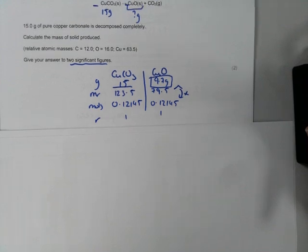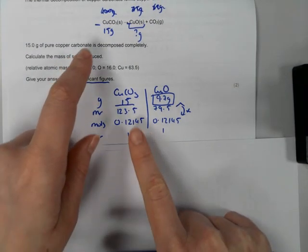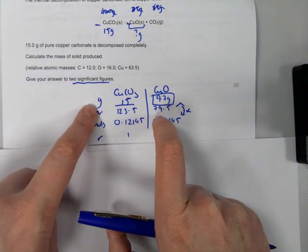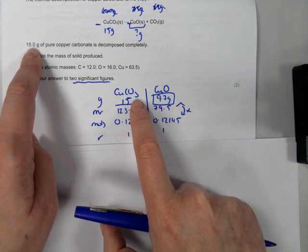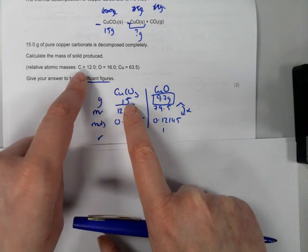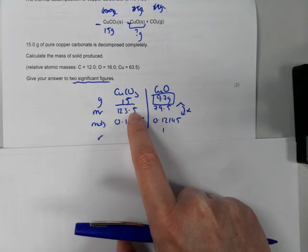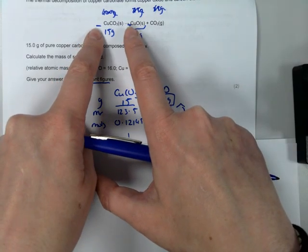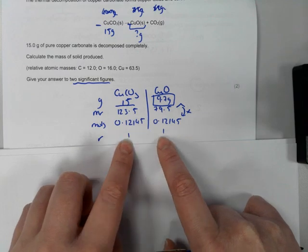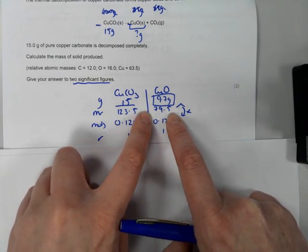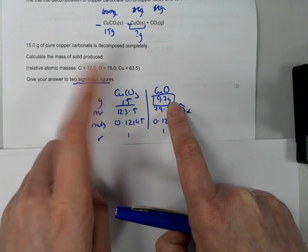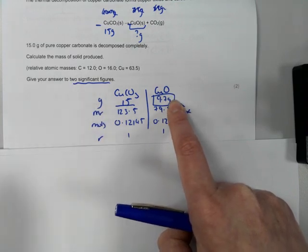Here is my moles table. I've included copper carbonate (given) and copper oxide (asked about), leaving CO₂ out. I write G, Mr, moles and ratio down the side. I have 15 grams of copper carbonate; formula mass is 123.5, giving moles. Don't round — keep four or five decimal places. Ratio is 1:1. Formula mass of copper oxide is 79.5. Multiply moles by formula mass: 9.7 grams.